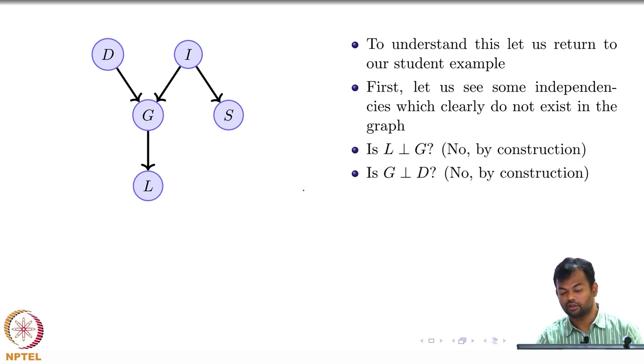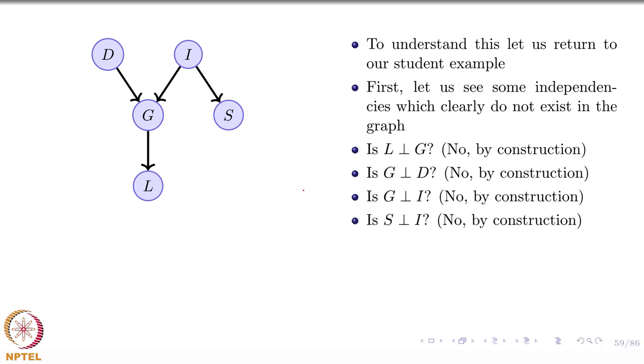So by construction, all of these are not independent. So what is the general rule that you can give me? A node is not independent of its parents, right. So that is the rule, that simple rule that we can come up with. We will come up with two more such simple rules.